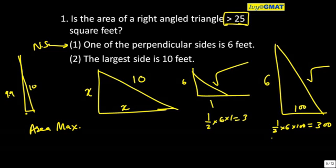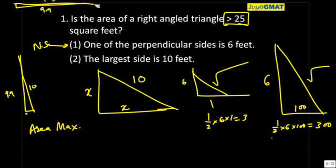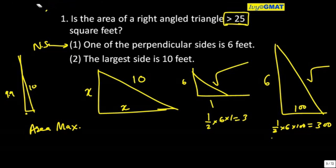I can take it the other way around also that this is 9.9 and this is 10, then also my area will be small. So overall my area will be large only when it is equal.